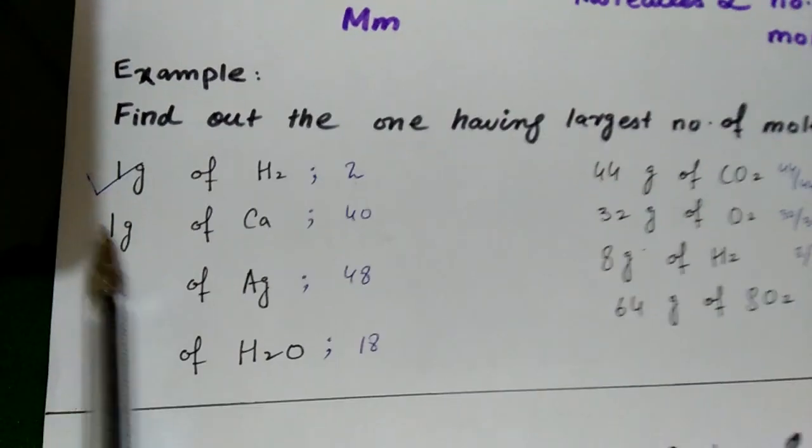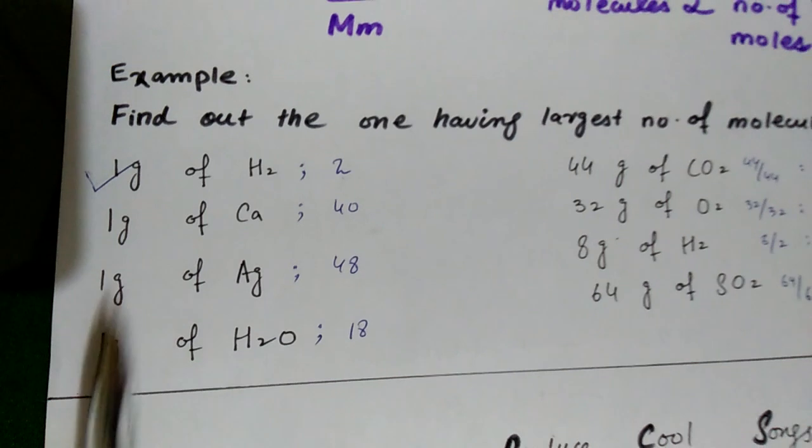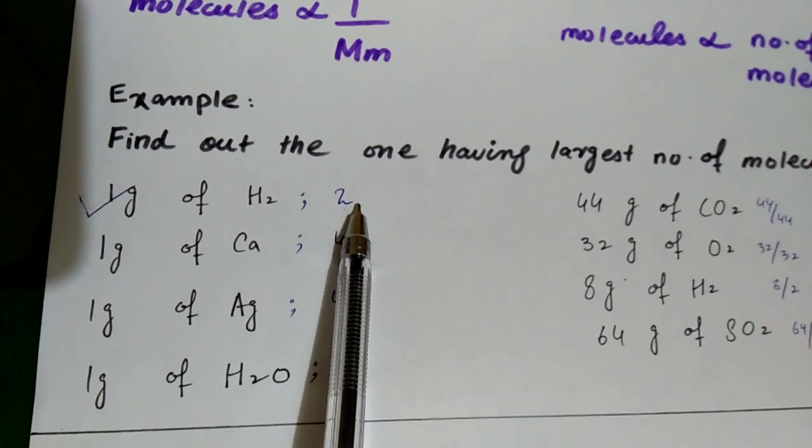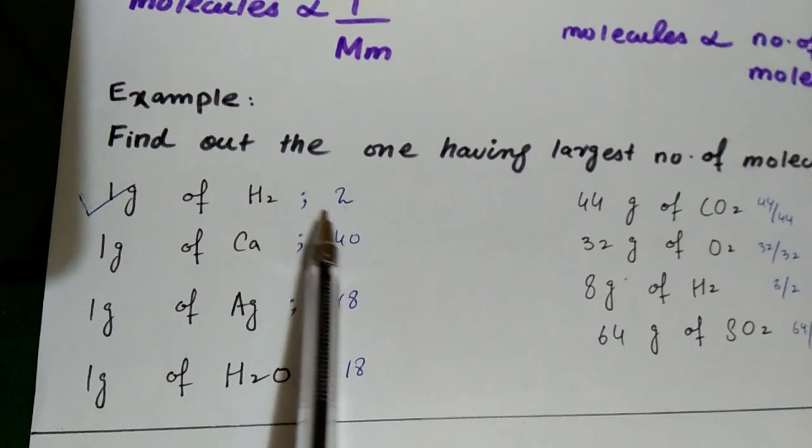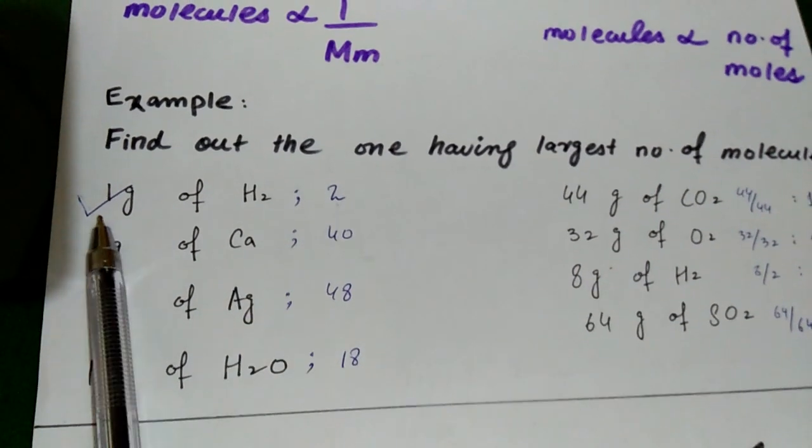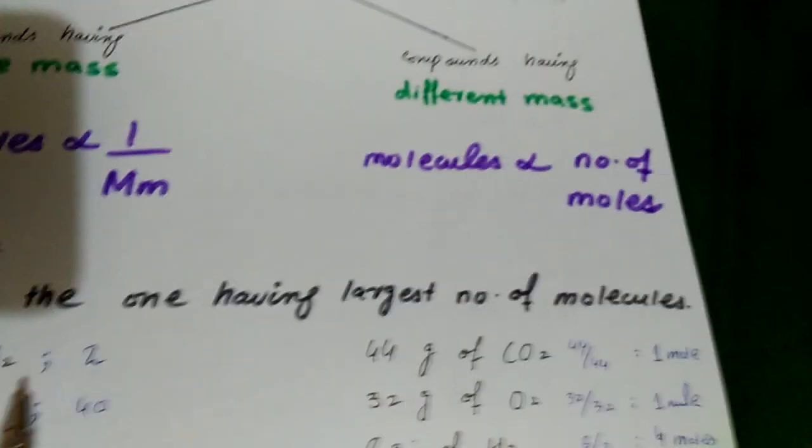Here is an example. The same molecular mass. It is given mass. Its molecular mass will be the highest. We have to write down. And what will happen here? The number of molecules will be the highest in this.